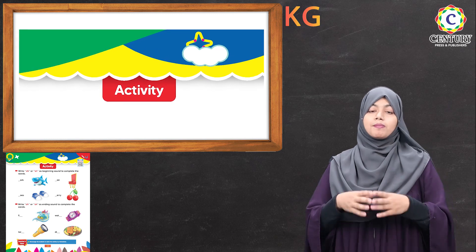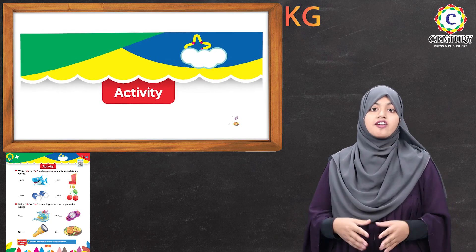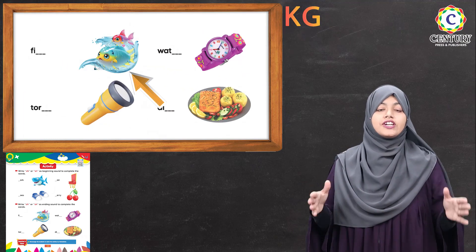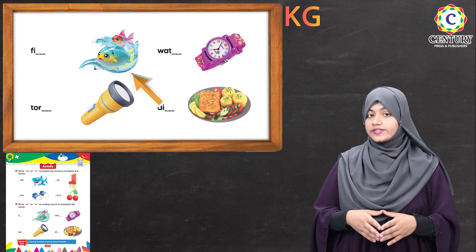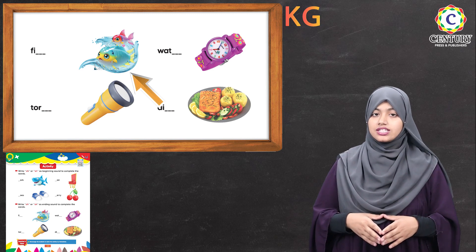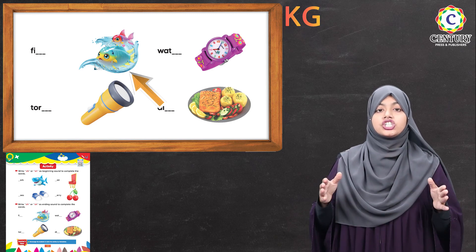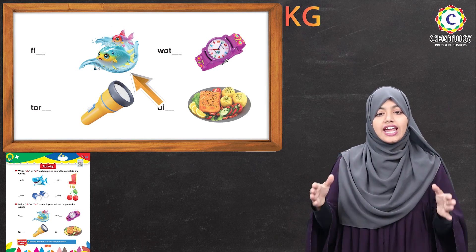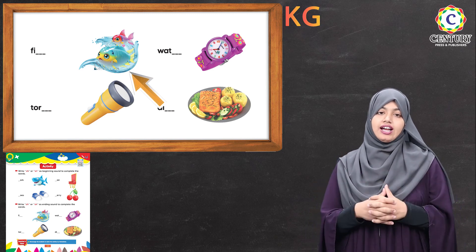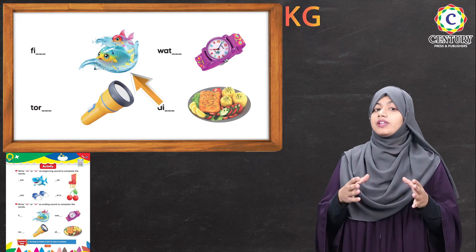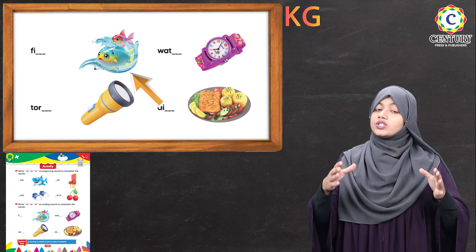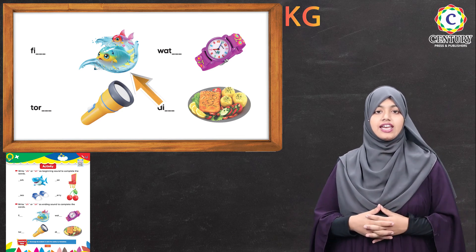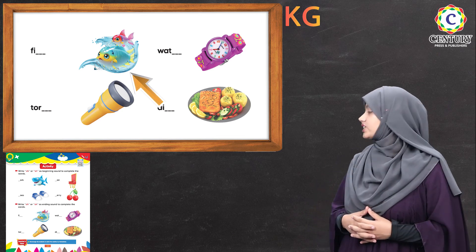So first we have 'fish.' Fish. Which sound is coming at the end? It's SH — meaning the sound of S and H. So here you have to complete the word by writing S and H. Fish.